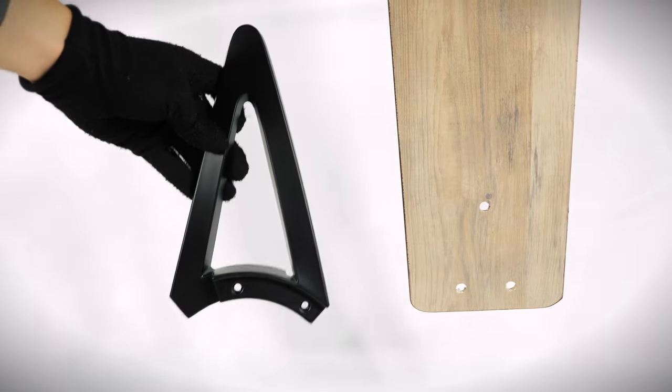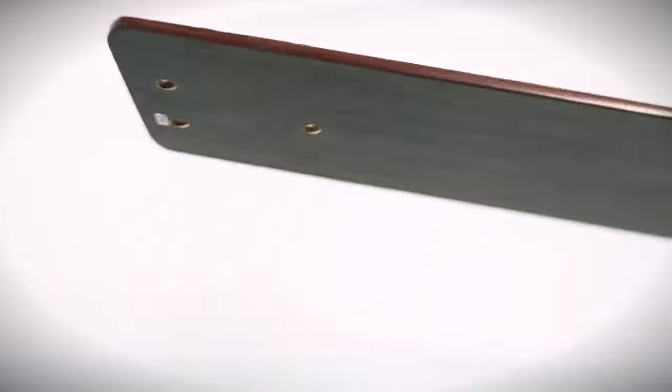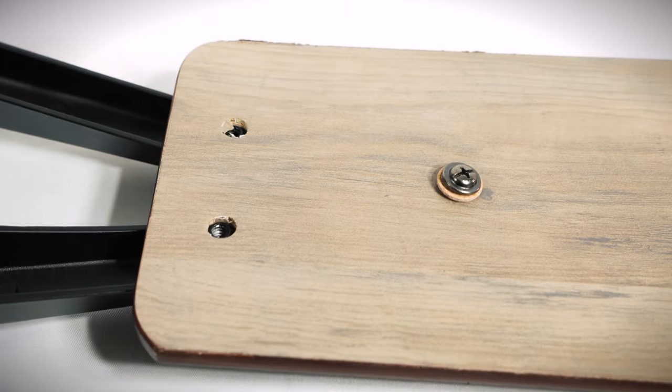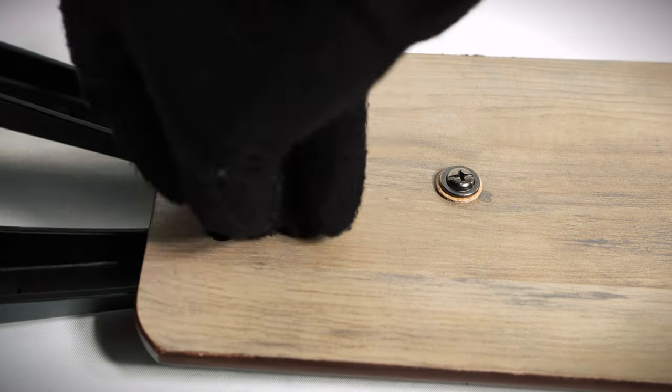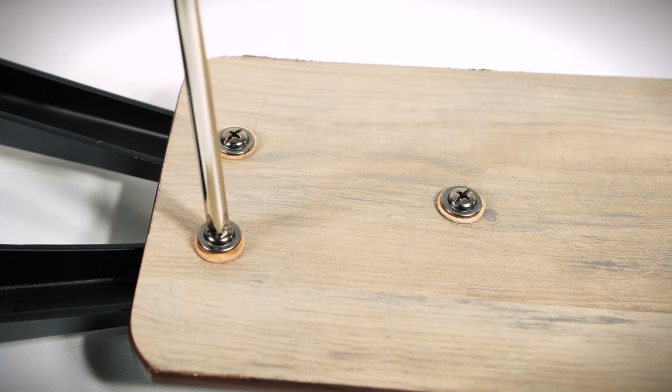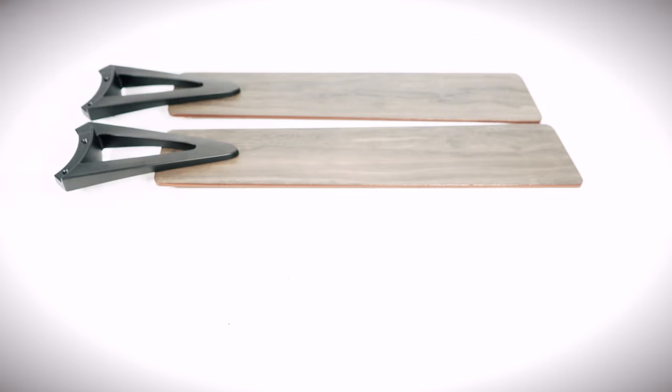Prepare a fan blade and a blade arm. Pick a side of the reversible blade to face down forward and align the blade arm with the holes underneath. Partially insert three blade attachment screws then tighten all screws securely. Repeat the process for the remaining blades.